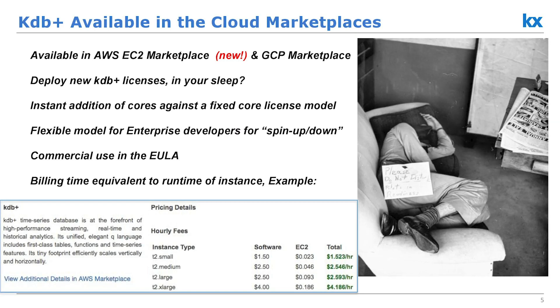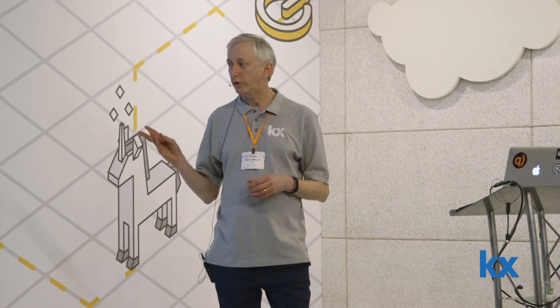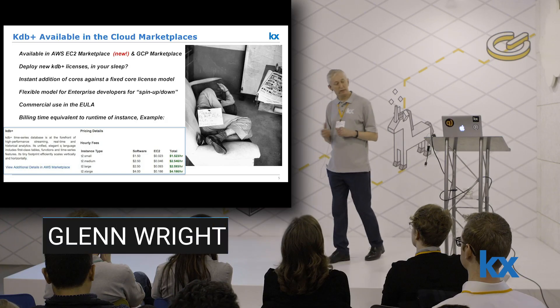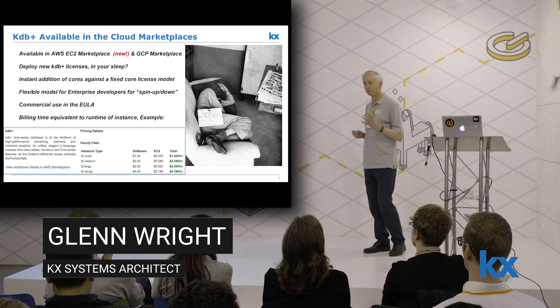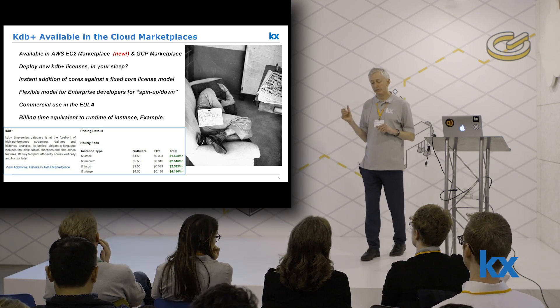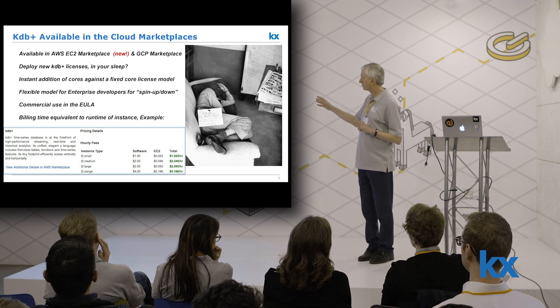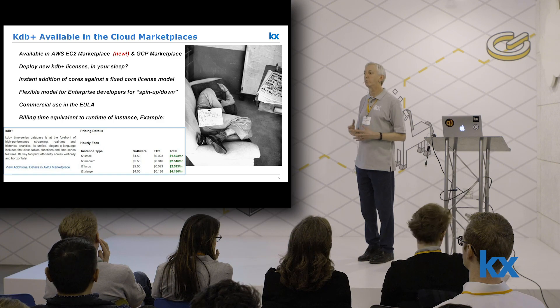KDB+ is on the EC2 Marketplace — you can go straight to the Marketplace, bring up an instance, and choose your instance size. There are options with one core, two cores, four cores, and so on. You're billed by the minutes and hours the instance is up. You know exactly what the expense line will be upfront. It's very useful for development, short bursty projects, or peak periods — a good way to supplement your enterprise license. We're going to show this demonstration today based on this model, using the standard license and standard image pulled down from the Marketplace.